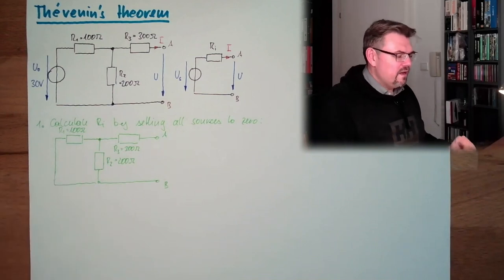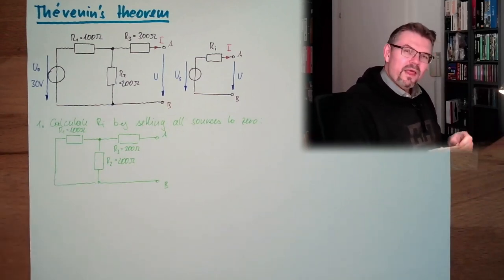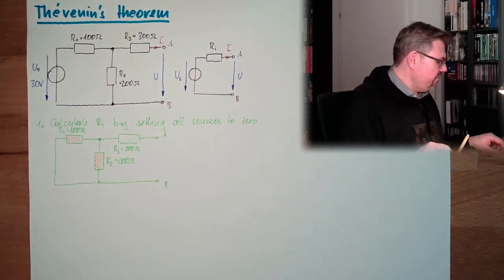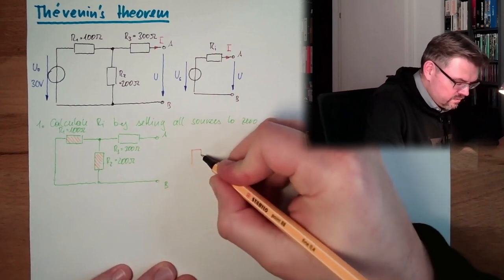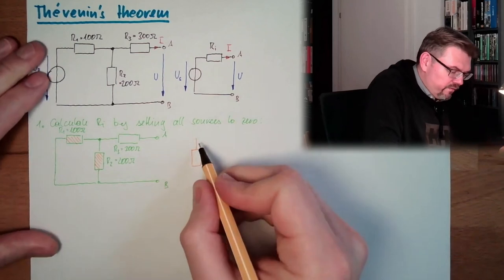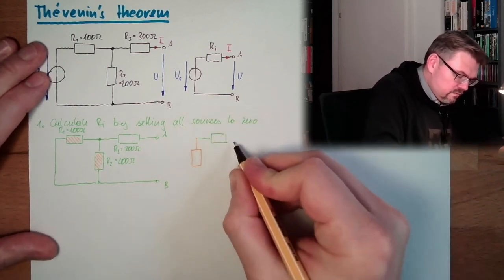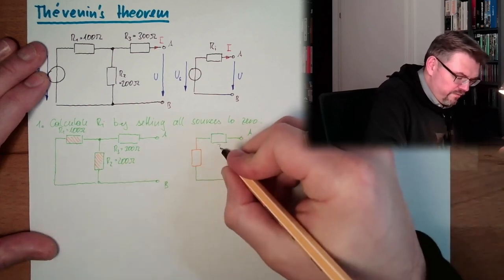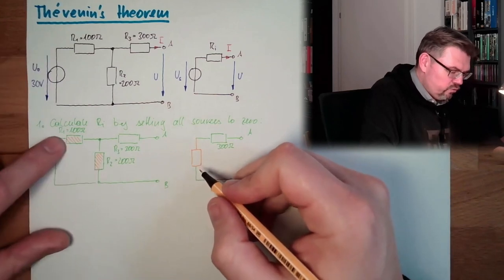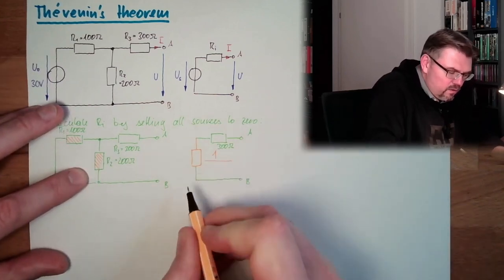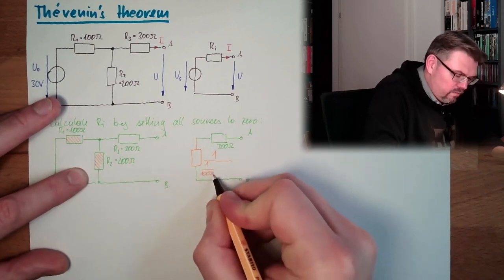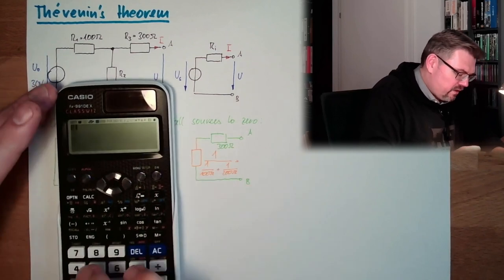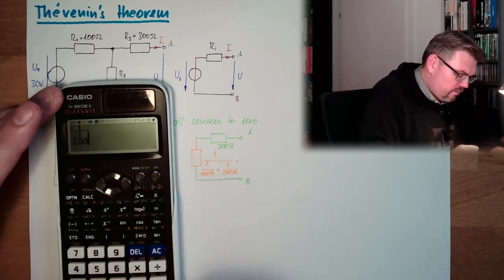We want to calculate a replacement resistance of those two. R1 and R2 are in a parallel circuit. So we have R3 in series with R1 parallel R2. That gives us 300 ohms plus 1 divided by (1/100 ohms + 1/200 ohms). Grab the calculator: 1 divided by (1/100 + 1/200).